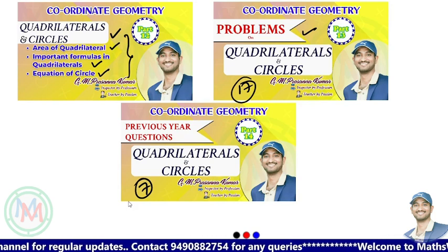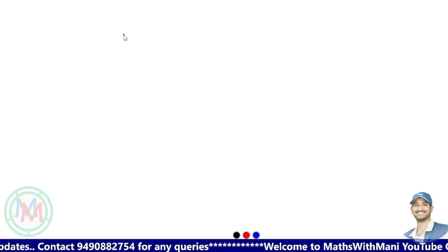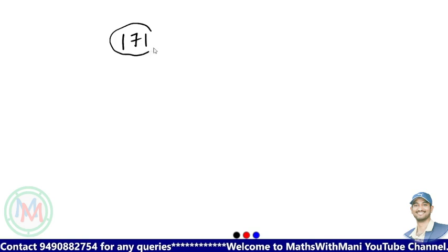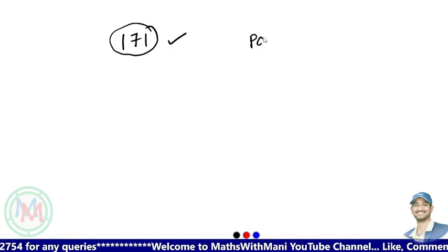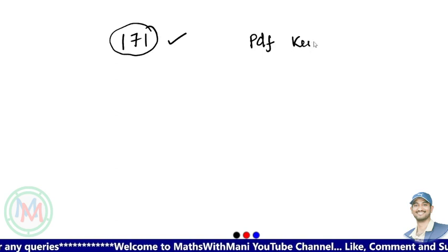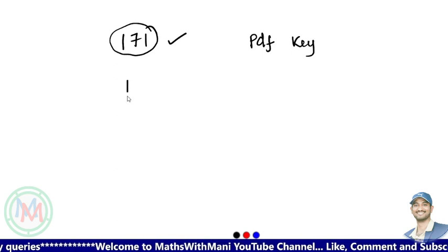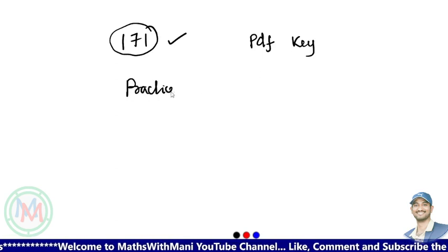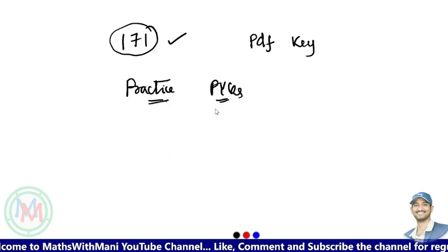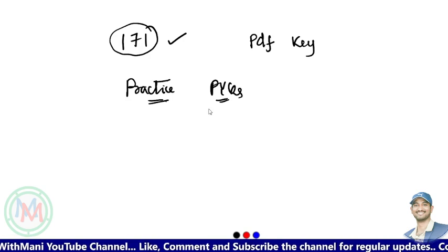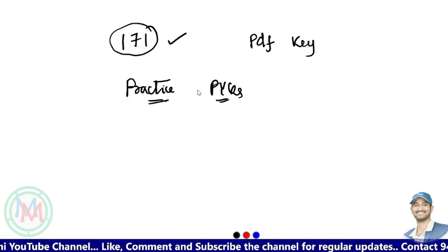So with this, the total course is complete. In total, 171 problems are discussed throughout the course. For these 171 problems, PDFs with answer keys are provided — one PDF for practice problems and one PDF for previous year questions, both with keys, included with the video course.